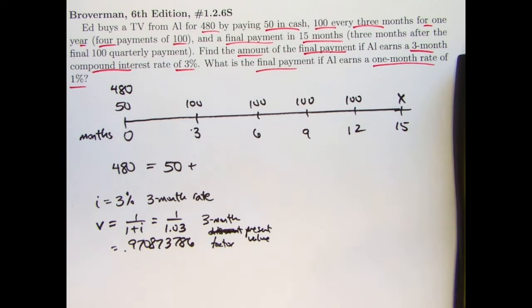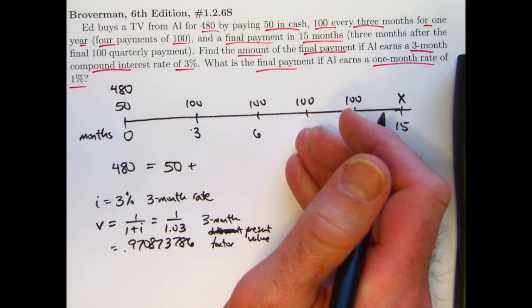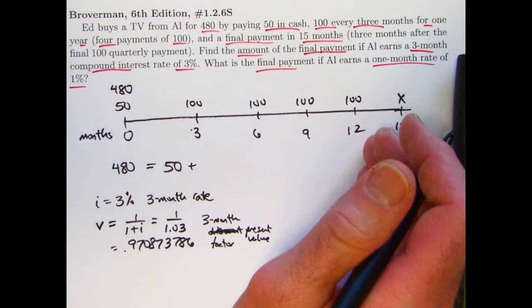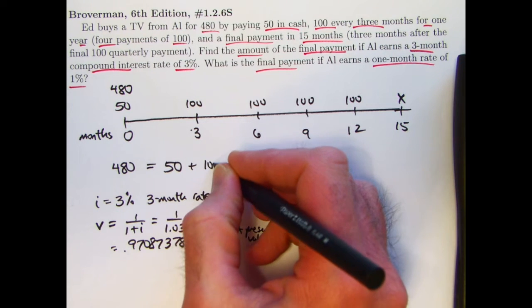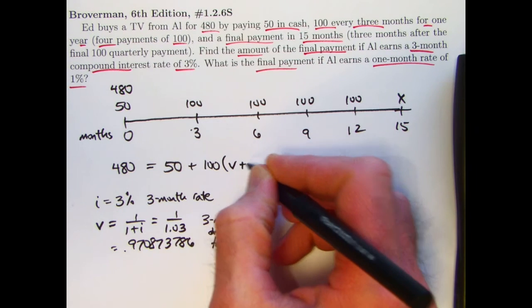For the 100 payment at time six months, I need to multiply by V squared. Pull it back in time two periods for V. For the nine-month one, V cubed. For the 12-month one, V to the fourth. I can factor out the 100 out of those and write it like this.